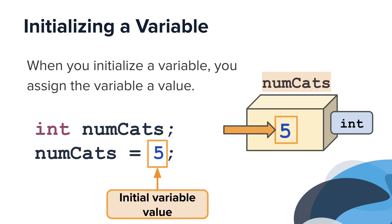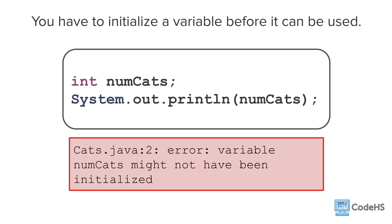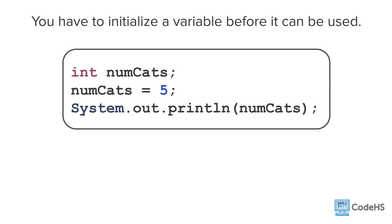When it comes to variable initialization, there are a few important notes. You have to initialize a variable before it can be used. Here, you declare the variable numcats and then try to print its value to the console. However, when the program runs, you get an error: variable numcats might not have been initialized. This is because the print statement is trying to access the variable numcats, but it hasn't been initialized — it's just been declared.